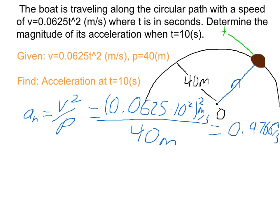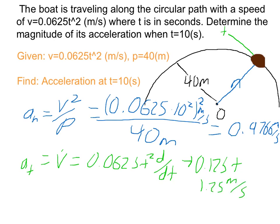Now let's do the tangential. Tangential is equal to v dot, so that will equal 0.0625 t squared d dt, which becomes 0.125 t. At 10 seconds, we have an acceleration of 1.25 meters per second squared.